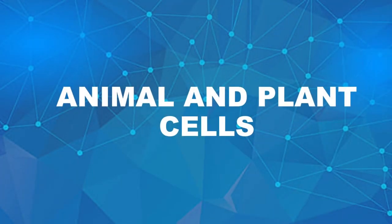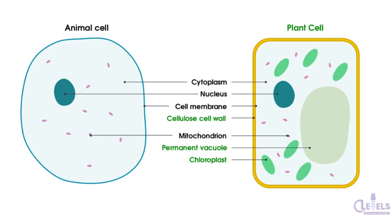The first topic we will be studying is the animal and plant cells. Here are two diagrams of the animal and plant cell. Just by looking at these diagrams, you can see that the plant cell has a specific shape — it is kind of like a square — and the animal cell does not. It is roundish and does not have a specific shape. The plant cell has this specific shape because it has a cell wall, which is not present in the animal cell.